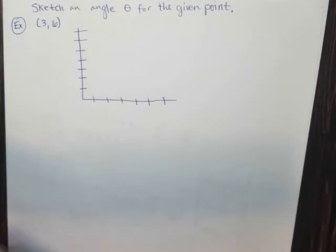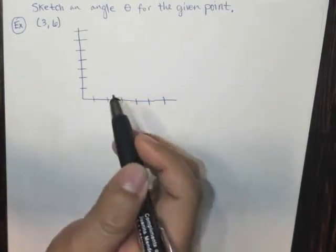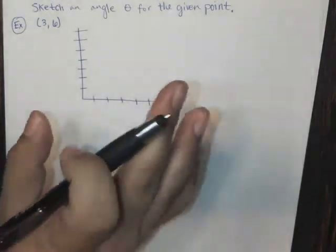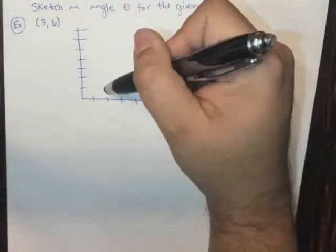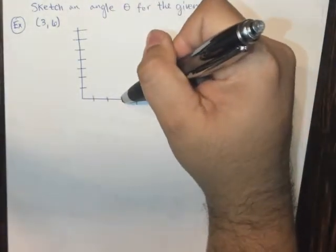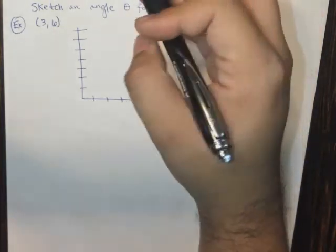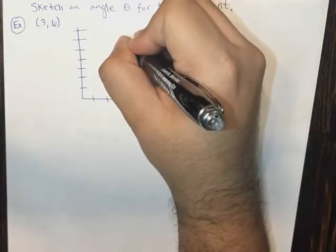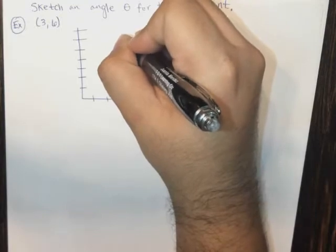So they gave us a point (3, 6). I'm going to just plot it here on my coordinate grid that I've drawn for you. So three, six... one, two, three, and then one, two, three, four, five, six. So it looks like it's somewhere right about here.